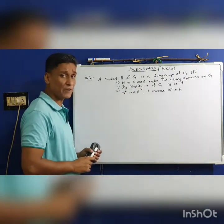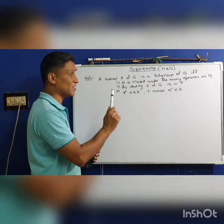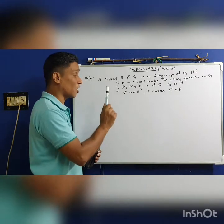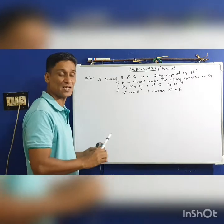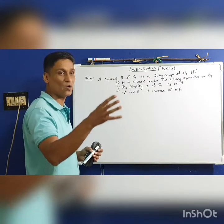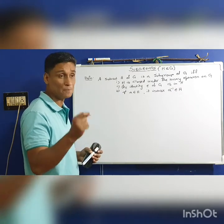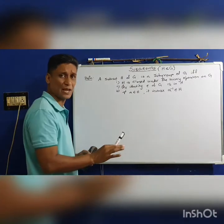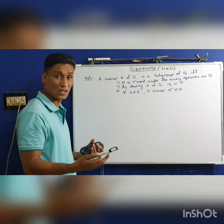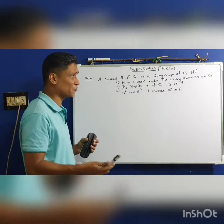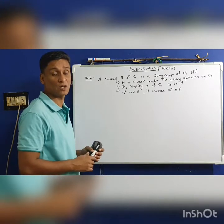H is a subgroup of G if and only if H is closed under the binary operation, the identity element E of G is in H, and for all A element of H, the inverse of A is also a member of H. In this case, H on its own right is a group under the same operation as that of G. This can be taken as a second definition of subgroup.